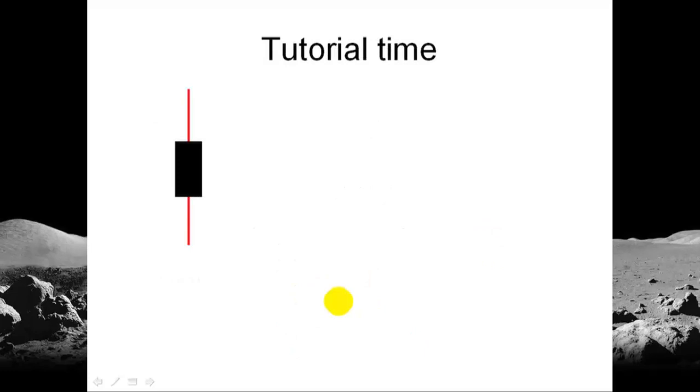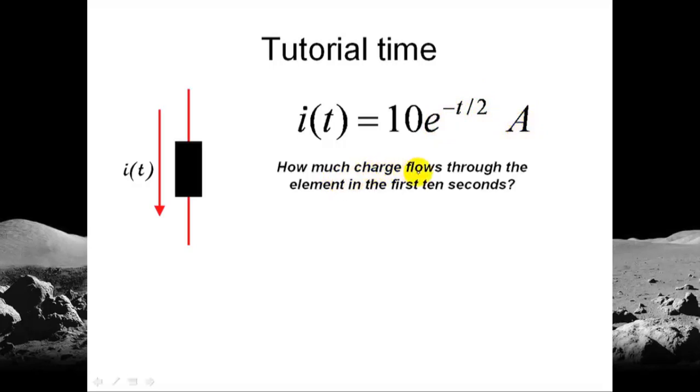Let's do an exercise. Tutorial time. We have an element there that we don't know what it is, but the current is given to us. That current is exponential: 10 times the exponential of negative t in seconds divided by 2 amps. And the question is, how much charge flows through the element in the first 10 seconds? That is, from t equals 0 to t equals 10. We know what to do. We find the area under this curve between t0 and t10.